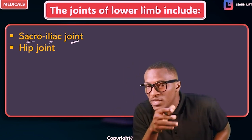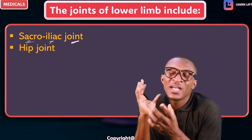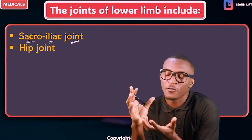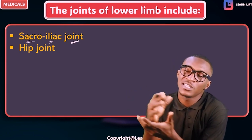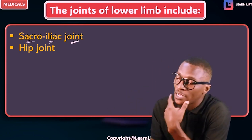Number two is what we call the hip joint. The hip joint is formed when the head of the femur fits into the acetabulum. We're going to talk about that.